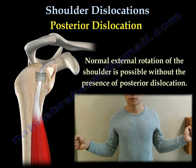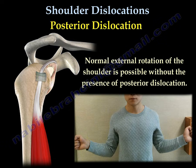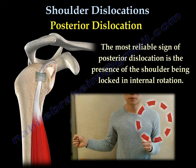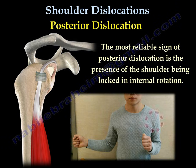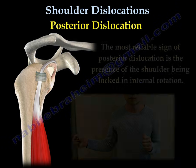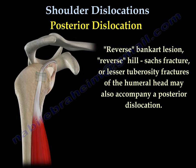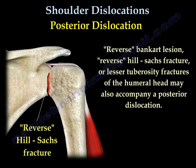This is the normal external rotation of the shoulder without the presence of posterior dislocation. The most reliable sign of posterior dislocation of the shoulder is the shoulder being locked in internal rotation. You can also see a reverse Bankart lesion, reverse Hill-Sachs fracture, or lesser tuberosity fracture with posterior dislocation of the shoulder.